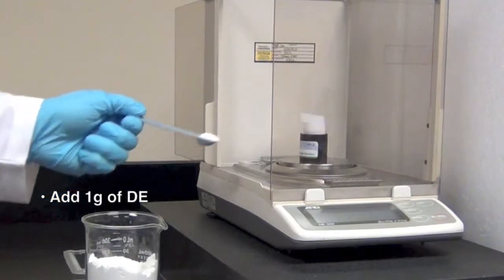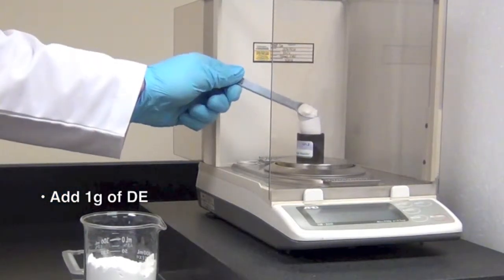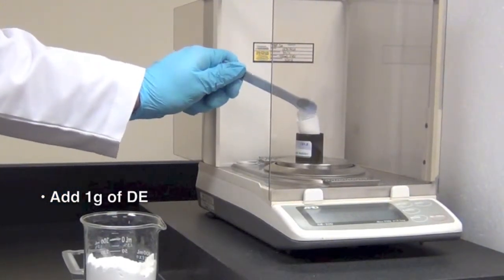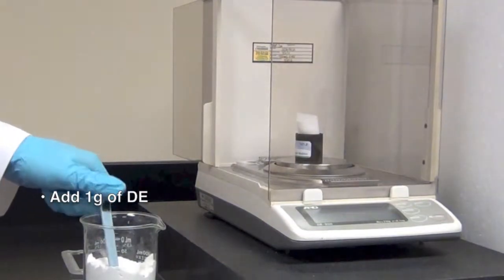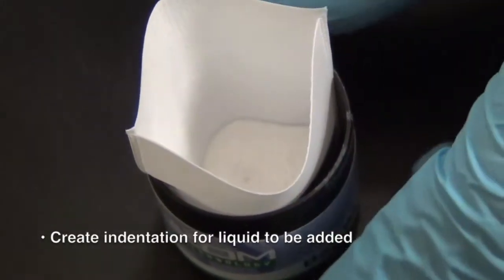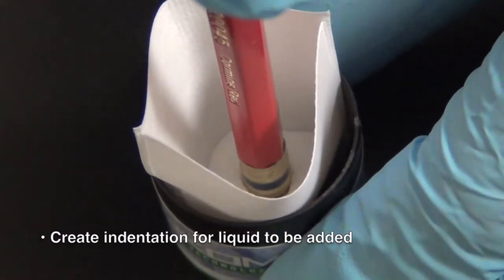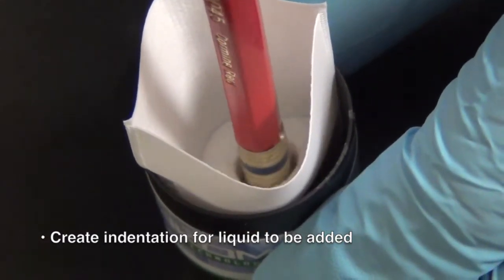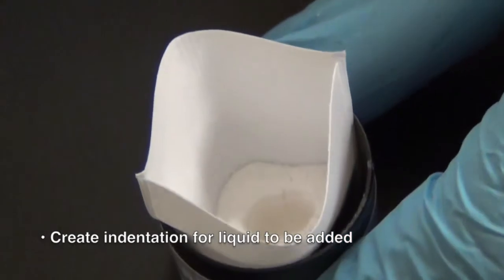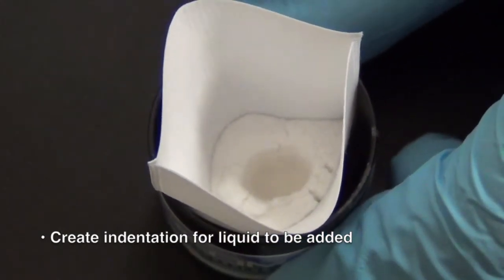Processing liquid samples is very simple. First, add one gram of diatomaceous earth to the filter bag. Press the eraser end of your pencil or a similar sized utensil into the diatomaceous earth to create an indentation into which the liquid can be added using a pipette.